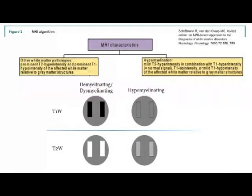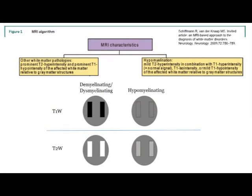I wanted to take a moment to review MRI characteristics. Myelinated white matter has a low signal on T2-weighted images and a high signal on T1-weighted images. This landmark paper in Neurology by Dr. Schiffman and Vanderknaap in 2009 reviews the characteristics of myelin across the age span, and also reviews demyelinating disorders as well as hypomyelinating disorders.